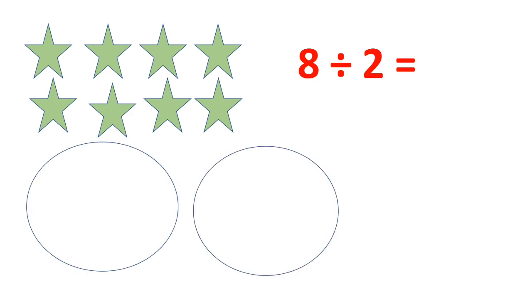For example, look at these stars and count with me 1, 2, 3, 4, 5, 6, 7, 8. There are 8 stars and we have to divide them in 2 equal groups. How we can divide them? We see that how many times we multiply number 2 to get the number 8. 2 ones are 2, 2 twos are 4, 2 threes are 6, 2 fours are 8. It means we have to multiply 2 four times to get the number 8. It means in each group there would be 4 stars.